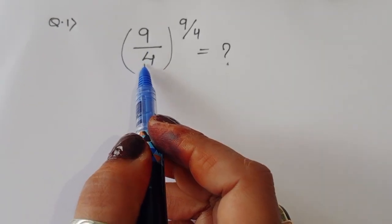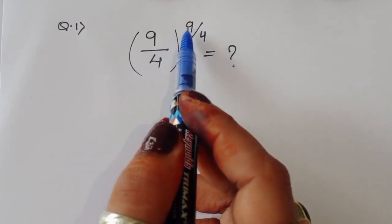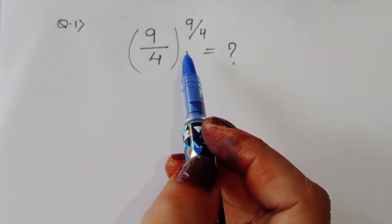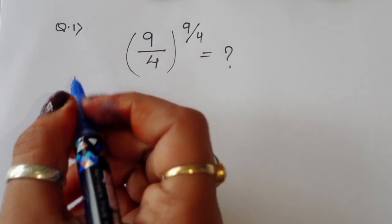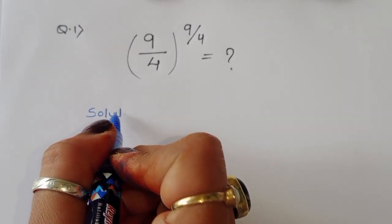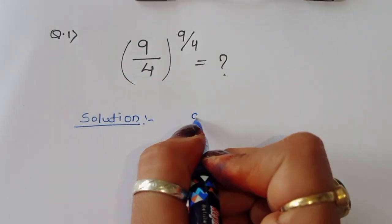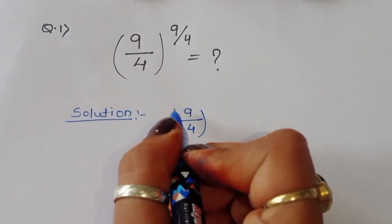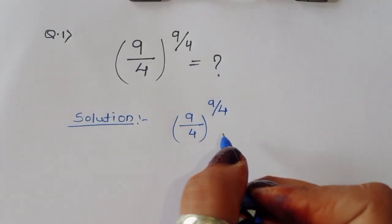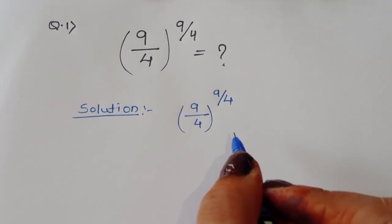The question is: 9^(4) divided by... 9^(4/9) divided by 4^(9/4). We have to find out the value of this. Let's see the solution.